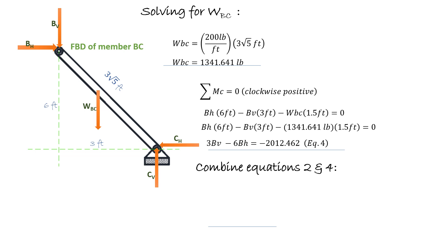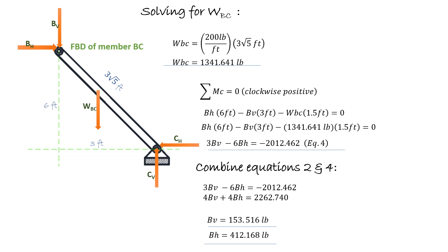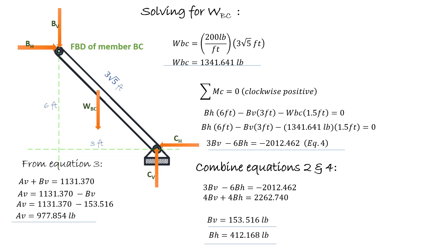Combining Equations 2 and 4 to solve for BV and BH, we get BV = 153.516 pounds and BH = 412.168 pounds. From Equation 3, AV plus BV equals 1131.370. Since we now have the value of BV, we substitute it into the equation to get AV = 977.854 pounds.